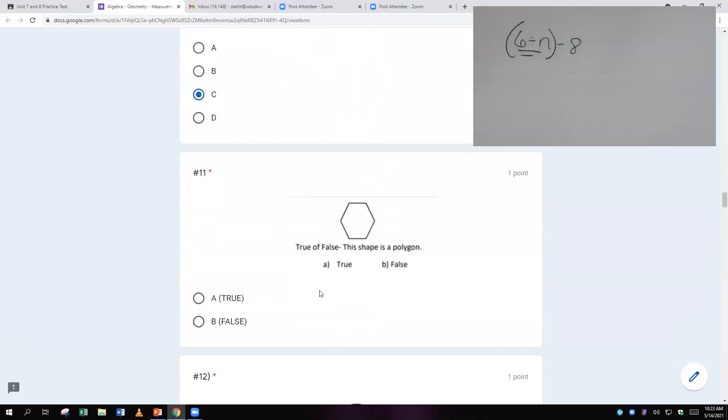True or false, this shape is a polygon? Well, polygon just means three or more sided figure with straight lines that is closed. So therefore, yeah, that's perfect. That's a polygon. Why not?